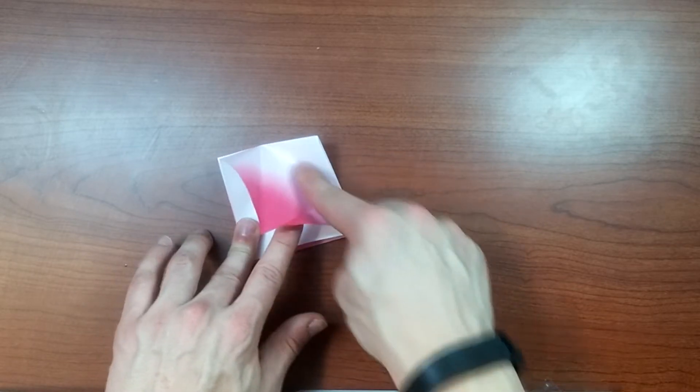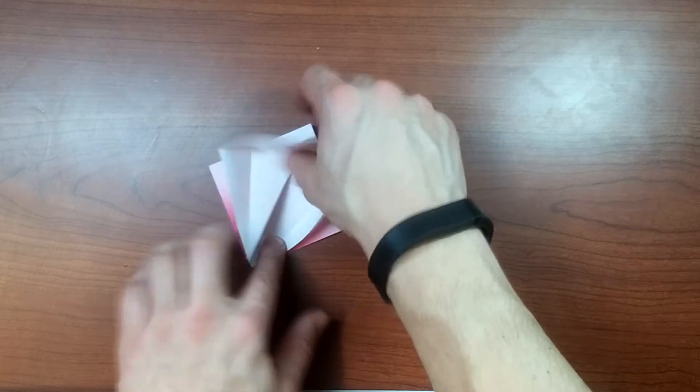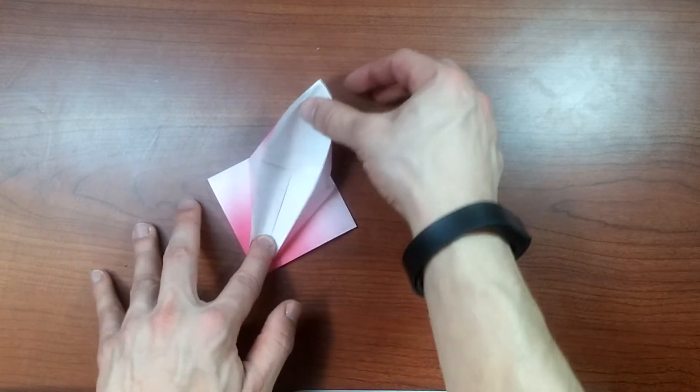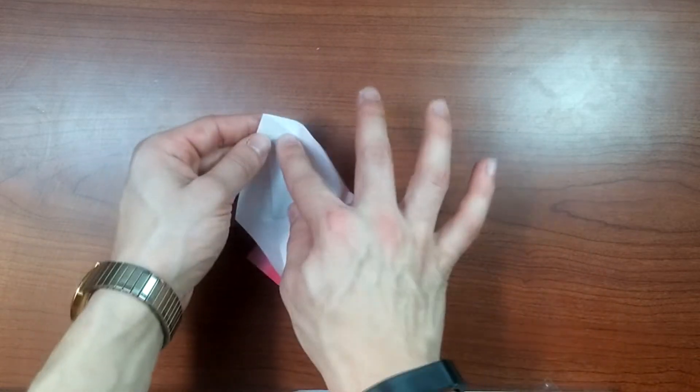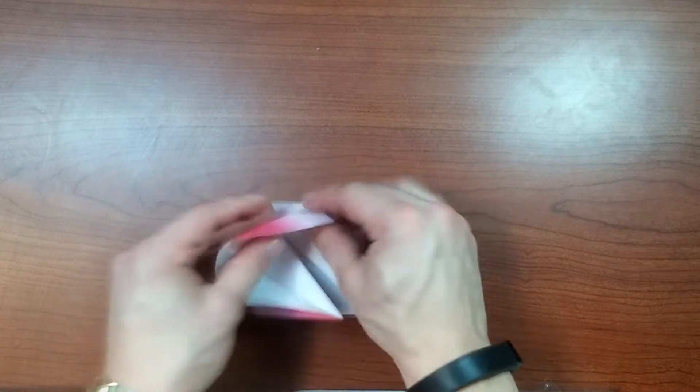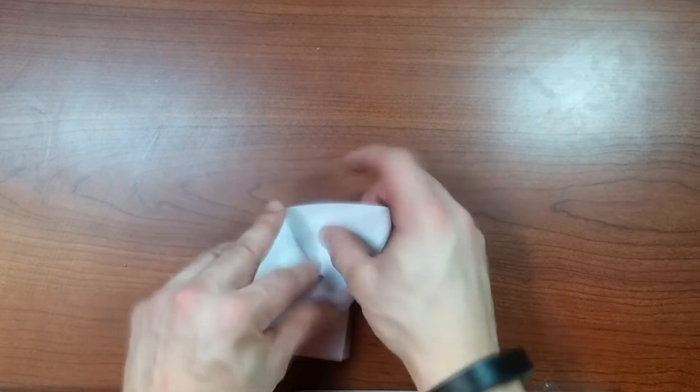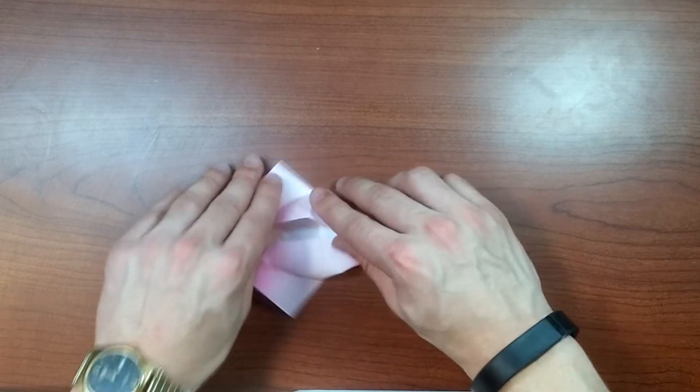Take this flap and fold it along this crease. Like this. Okay, it's not going to lay flat. Next, inverse these top two folds. And it will lay flat once you do that. Like this.